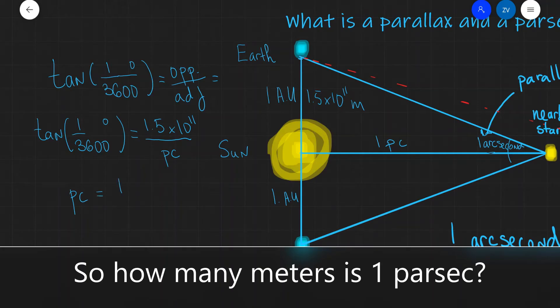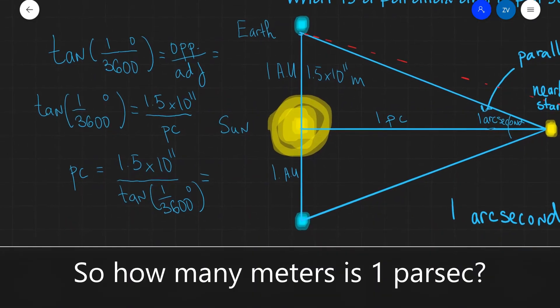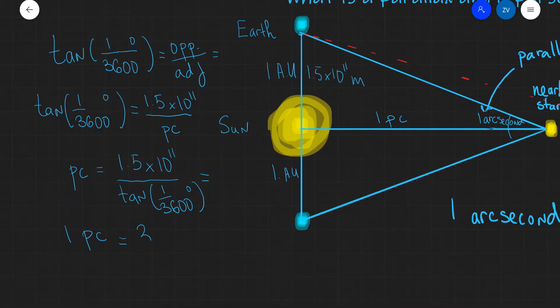And this will be equal to 1.5 times 10 to the power of 11 meters divided by the tan of a very, very tiny angle. One arc second, which is one over 3600th of a degree. So, if we put that into a scientific calculator, we're going to get that one parsec is actually equal to 3.1 times 10 to the power of 16 meters. So, we've just calculated the value of one parsec in meters. As we can see, this is a pretty large distance. And in fact, we are going to use this as a unit of measurement in astronomy to make sense of the large distances from the Earth to stars.